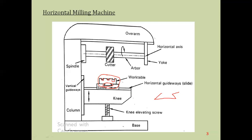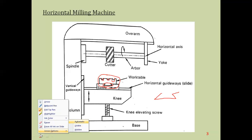On this arbor, as it rotates, the cutter also rotates, and this cutter is a multi-point cutter rotating along the horizontal axis — therefore we call it a horizontal milling machine. The only difference between a horizontal and vertical milling machine is the position of the spindle and the cutter, which we will see in the next slide.